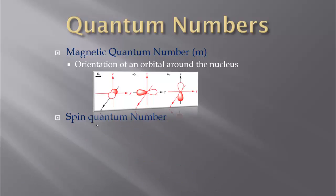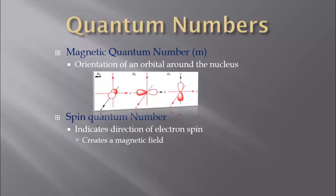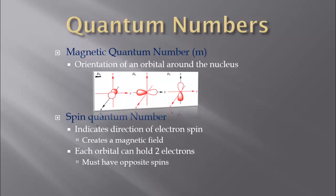The last quantum number is your spin quantum number. This indicates the direction of electron spin. As the electrons are moving around, they themselves are spinning, and when they spin, they create a magnetic field. We know that each orbital can hold up to two electrons, so they must have opposite spins. If they have the same spin, they're going to create the same magnetic field and repel each other — whether both positive or both negative. They must have opposite spins so that one is creating a positive and the other a negative, allowing them to occupy that same space.